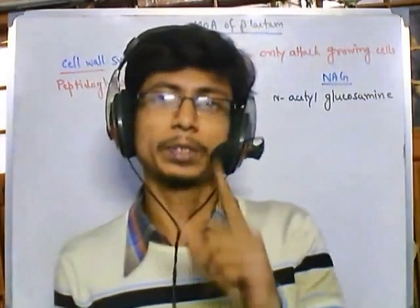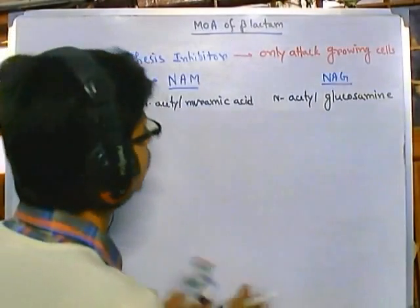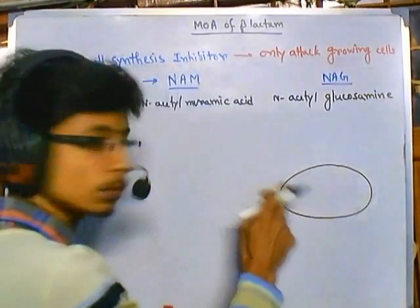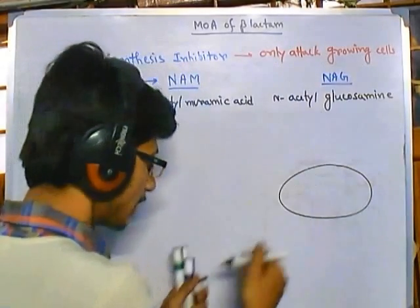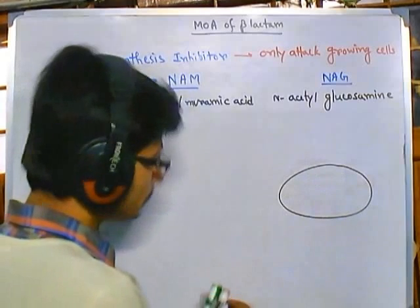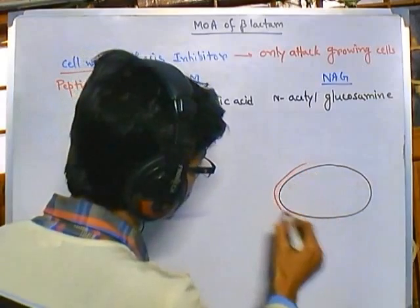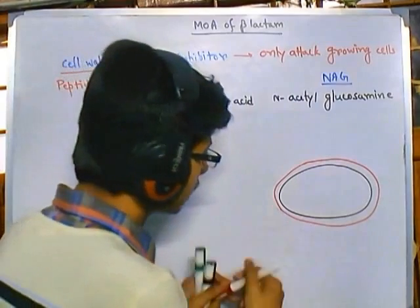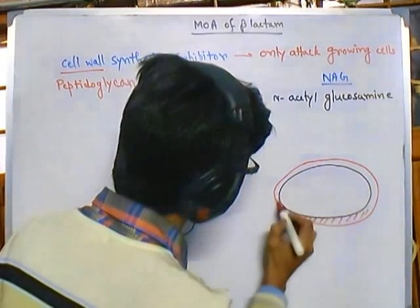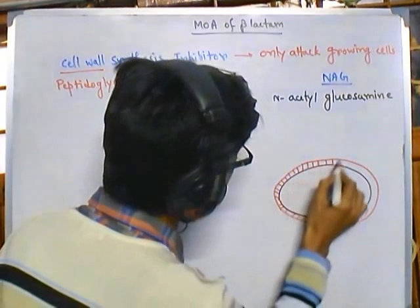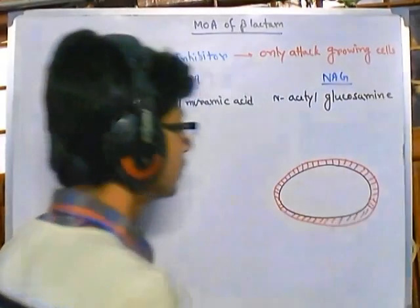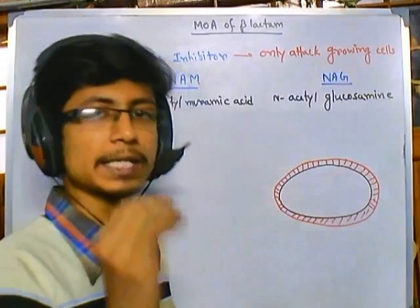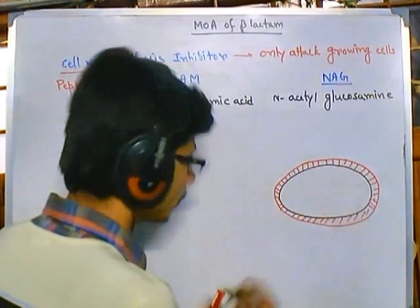Let me draw a bacterial cell to make this very clear. This bacterial cell has a cell membrane — drawn in black — which is the primary membrane. Surrounding this membrane there is another layer: thick for gram-positive bacteria and thin for gram-negative bacteria. This red layer is termed the peptidoglycan layer or cell wall. There is also a small gap region between the cell membrane and cell wall called the periplasmic space for gram-negative bacteria, or periplasm for gram-positive bacteria.